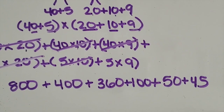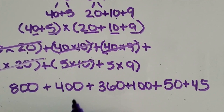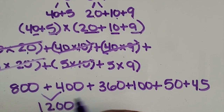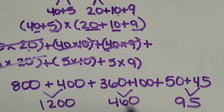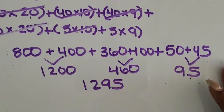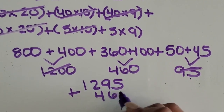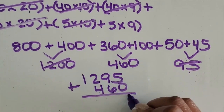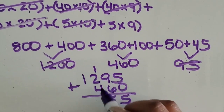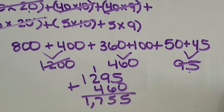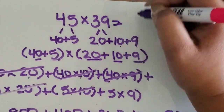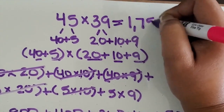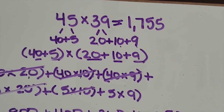This is just another way to decompose one of those factors. Now we can add them together: 800 and 400 is 1,200; 360 plus 100 is 460; and 50 plus 45 is 95. Then 1,200 plus 95 is 1,295, and I'm going to add that to 460. I have 5 ones, 15 tens gives me an extra 100, 7 hundreds, and 1,000. So again, our total product is 1,755.